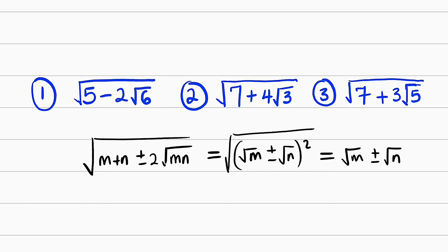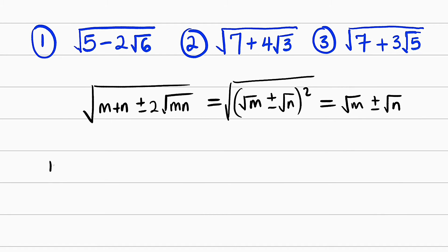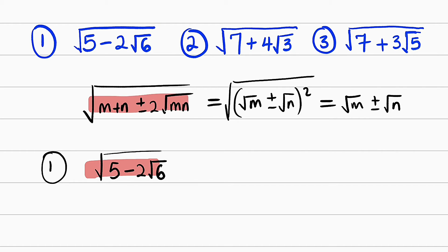So now let us apply the same idea to solve these three problems. The first one is square root of 5 minus 2 root 6. So we have the first one: square root of 5 minus 2 root 6. Now let us relate this together. From here, you can see we have 2 here, we have 2 here.